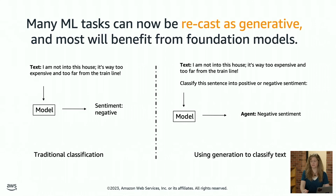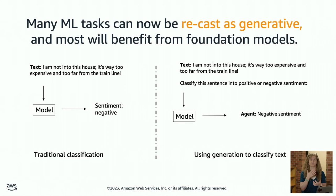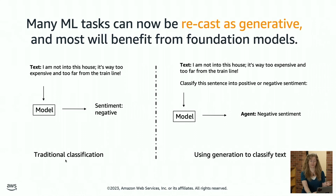Interestingly, many ML tasks that years ago we'd treat as classification are now being recast. For example, you'd take a text like 'I'm not that into this house — it's too expensive and too far from the train line,' put it into a model explicitly trained for binary classification, and the model would return sentiment negative. That's traditional classification.